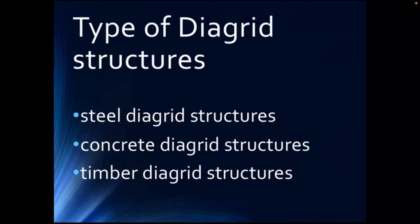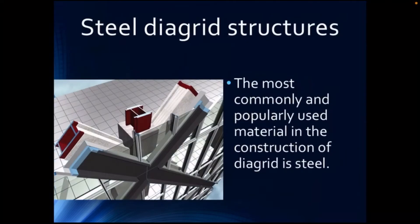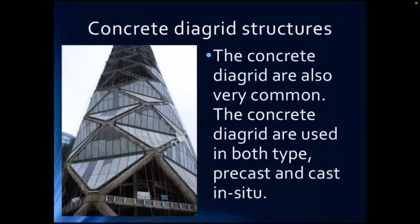Types of diagrid structures include steel, concrete, and timber diagrid structures. Steel diagrid structures are the most commonly and popularly used. The sections commonly used are rectangular high-strength steel, rounded high-strength steel, and wide flanges. The weight and size of sections are designed to resist high bending loads, and they can be quickly erected with low labor installation costs.